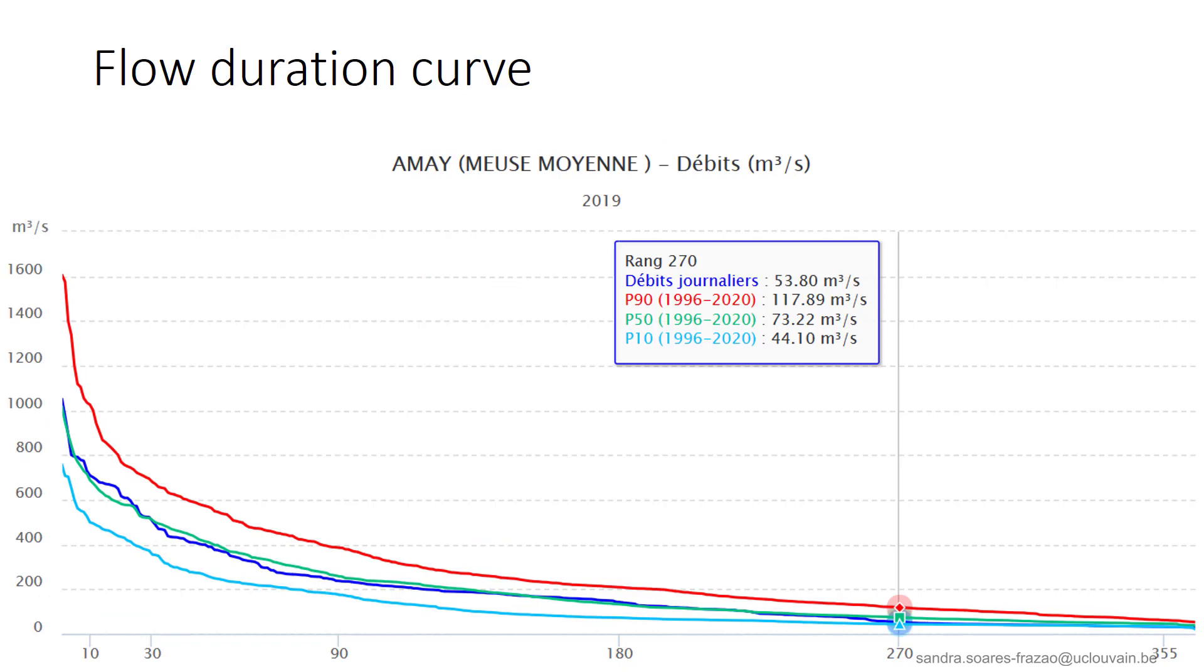If we look at the DM9 value here, so a low flow value, we see that the value of the year 2019 here was rather low, just slightly above the 10%, the P10 value, indicating that the drought season was rather severe that year.